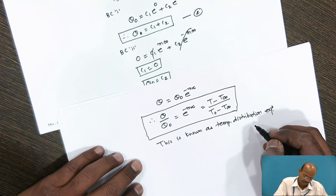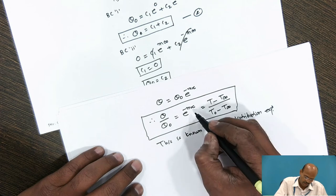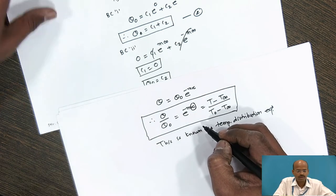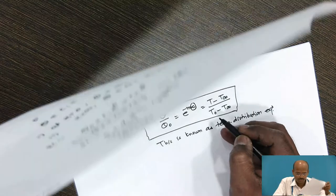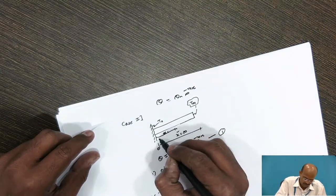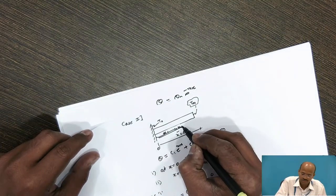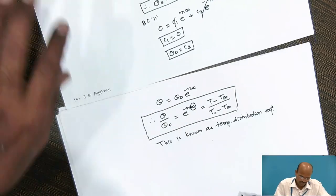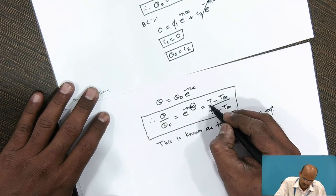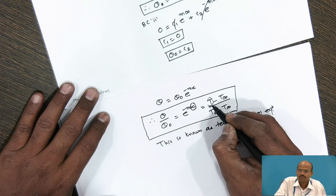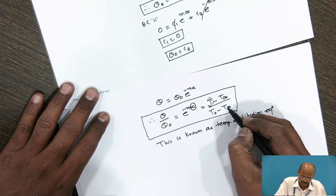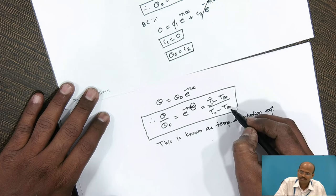What does this mean? At any known length x — say x₁, x₂, etc. — we can find the unknown temperature at that location, since T₀ and T∞ are easily measurable.